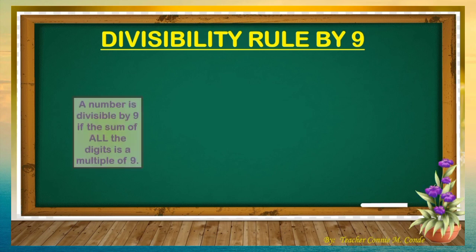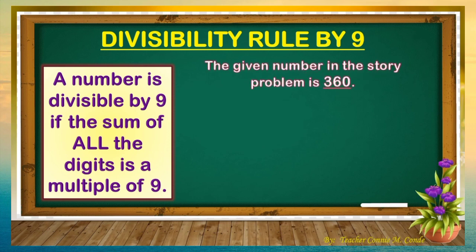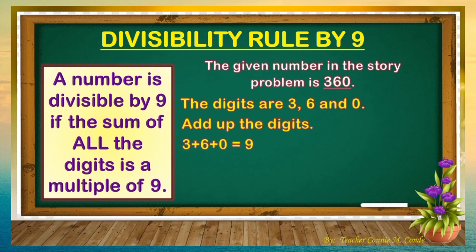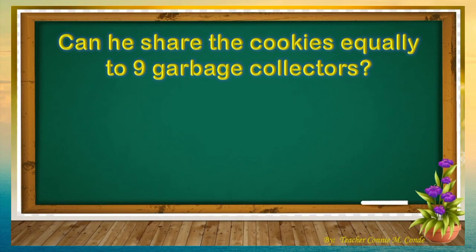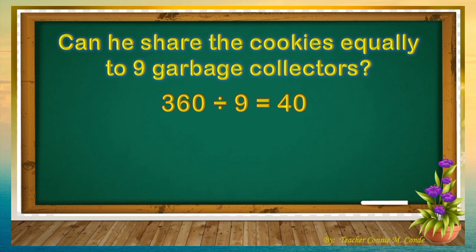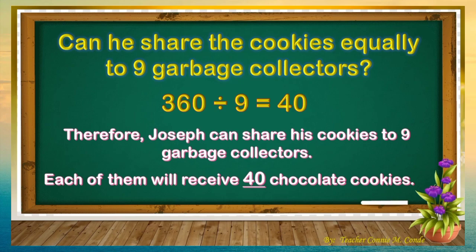Divisibility rule by 9 states that a number is divisible by 9 if the sum of all the digits is a multiple of 9. The given number is 360; the digits are 3, 6, and 0. Adding them: 3 plus 6 plus 0 equals 9. Is 9 a multiple of 9? Yes. Therefore, 360 is divisible by 9. Proof: 360 divided by 9 equals 40. Joseph can share his cookies to 9 garbage collectors, and each will receive 40 chocolate cookies.